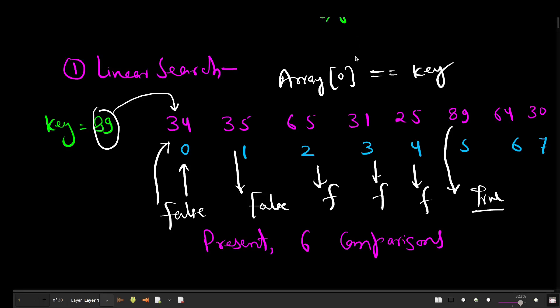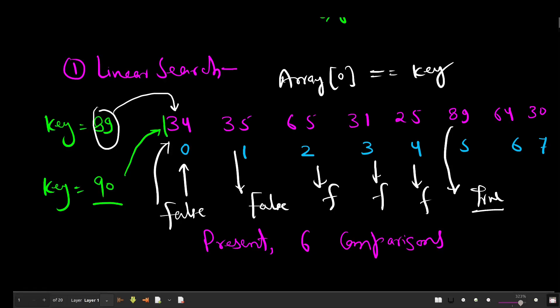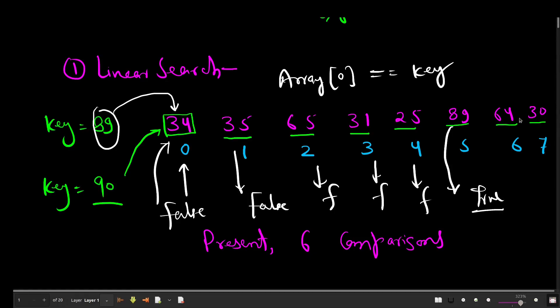Let us suppose you want to find out some other element in this array, maybe an element that is not present here, and I can make that key element equal to 90. So algorithm will start finding or comparing 90 to this element first. When this element is compared to 90 it gives us false, false here as well, false, false, false, false, and false in each case. Now the loop ends, and when the loop ends it returns false or minus 1.